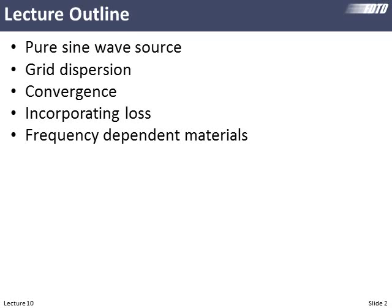Next we'll talk in more detail about grid dispersion. The pulses traveling across our grid showed some ringing at the trailing edge due to grid dispersion — a wave traveling through the Yee grid actually propagates slightly slower than a physical wave because it's interacting with the Yee grid. It turns out we can predict that and compensate for it in many circumstances. Convergence is the biggest topic, possibly the most important thing we discuss all semester.